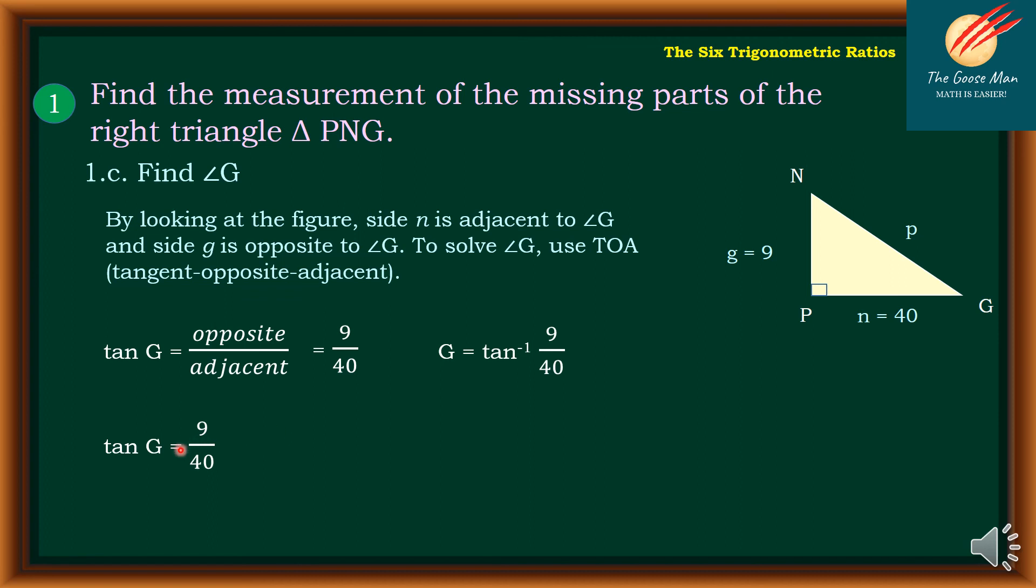Moving on, since I'm looking for the angle G, so I'll press now tangent or arctan 9 over 40. So I'll get now here, that G = 12.680838349. Or angle G = 12°40'49.38".